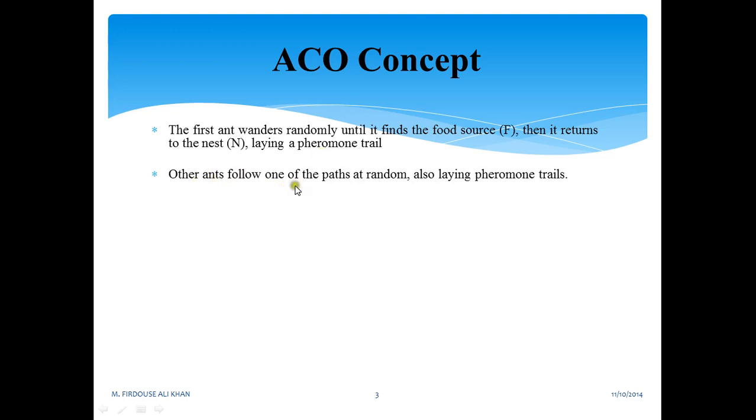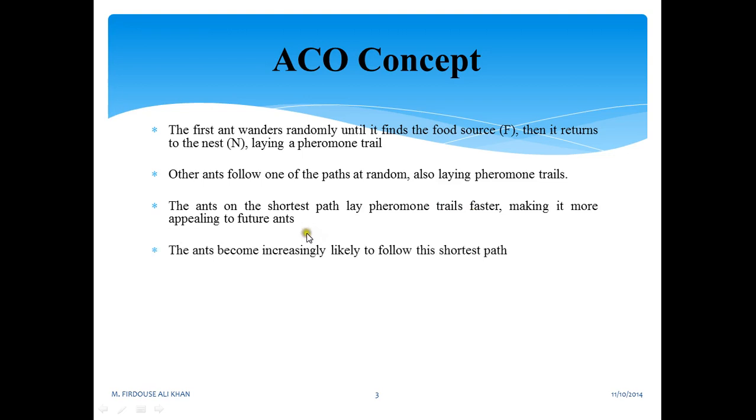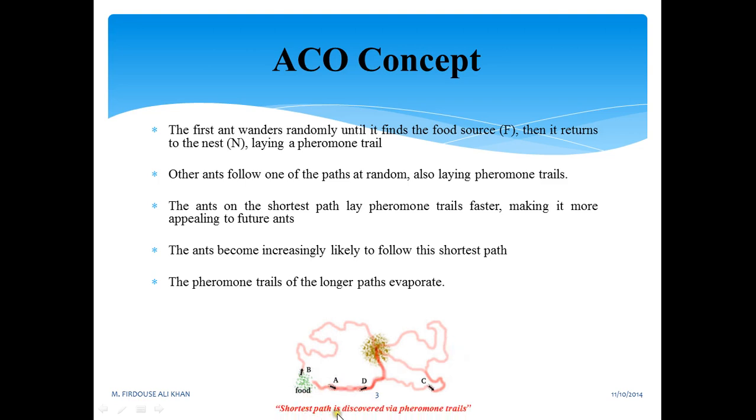Other ants follow one of the paths at random, also laying pheromone trails. The ants on the shortest path lay pheromone trails faster, making it more appealing to future ants. The ants become increasingly likely to follow this shortest path. The pheromone trails of the longer path evaporate. As you can see here, the longer path is this one between food and the nest, and this is the shortest path which gets more pheromone trails. The longest path pheromone trails evaporate with respect to time. The shortest path is discovered via pheromone trails.